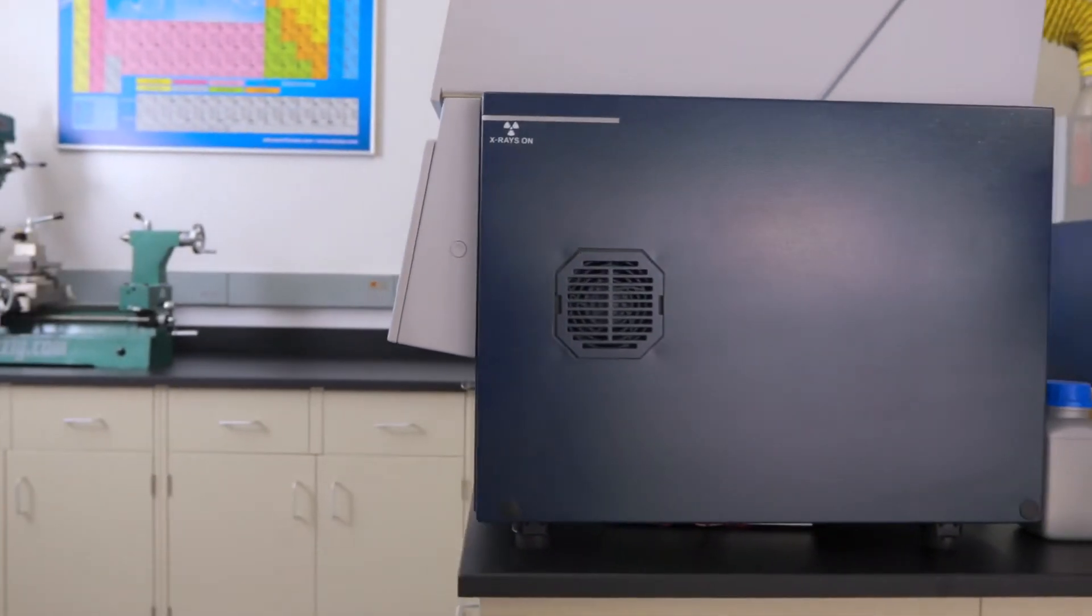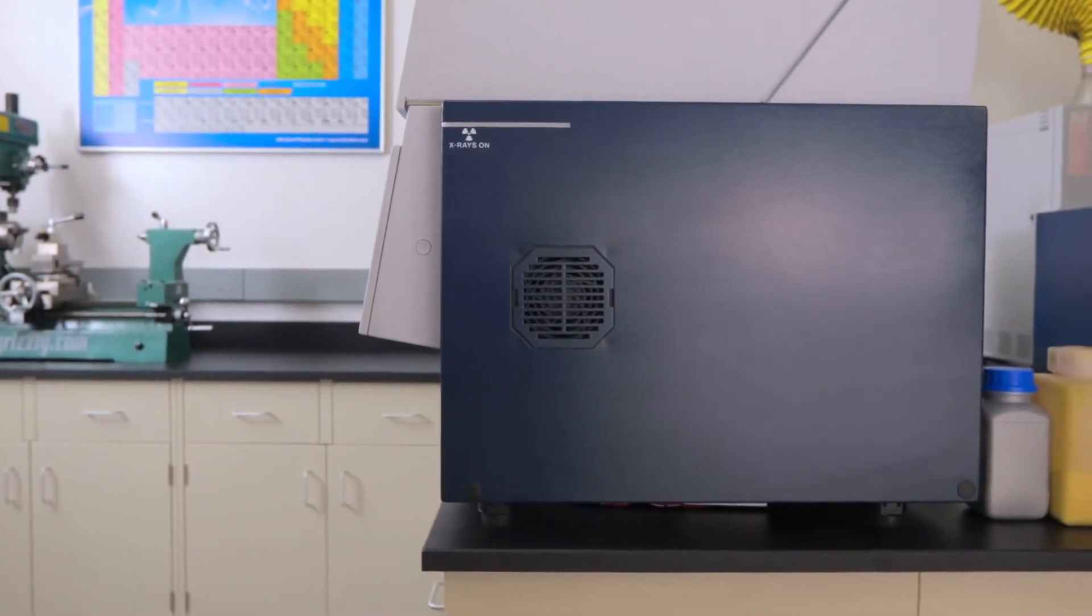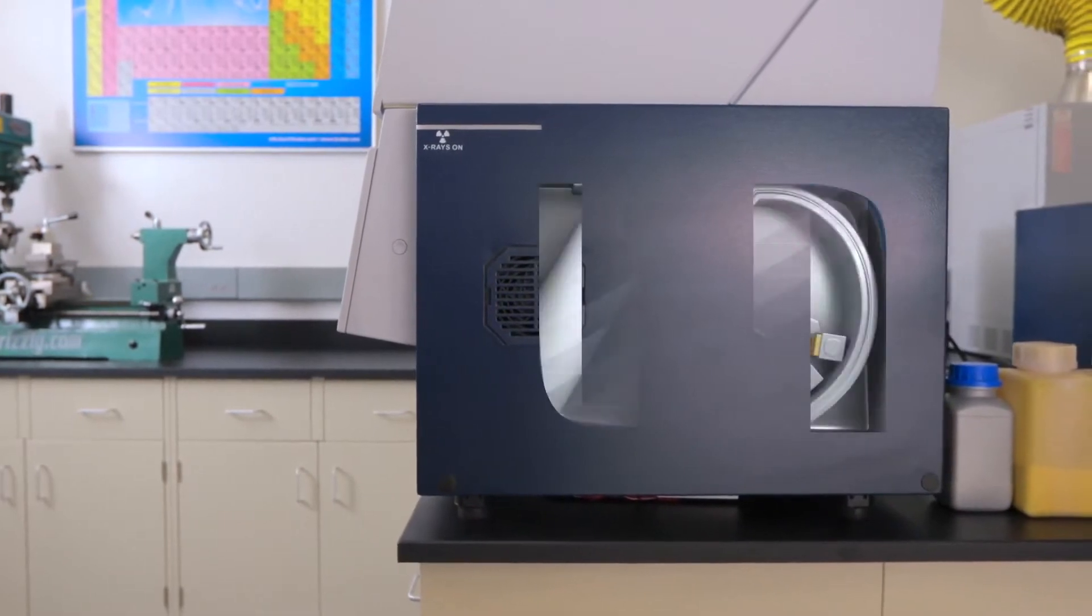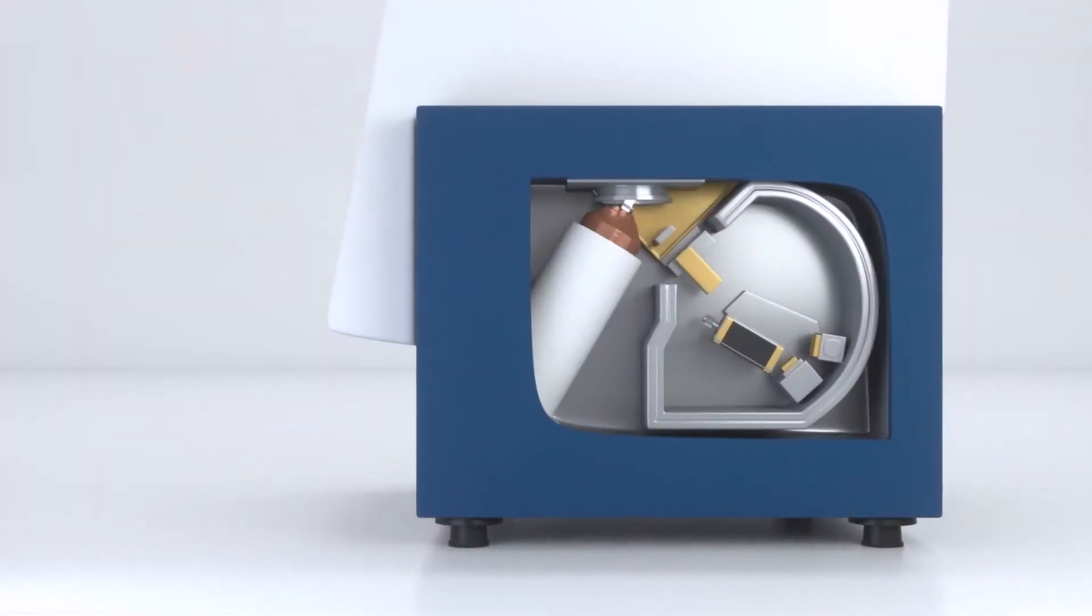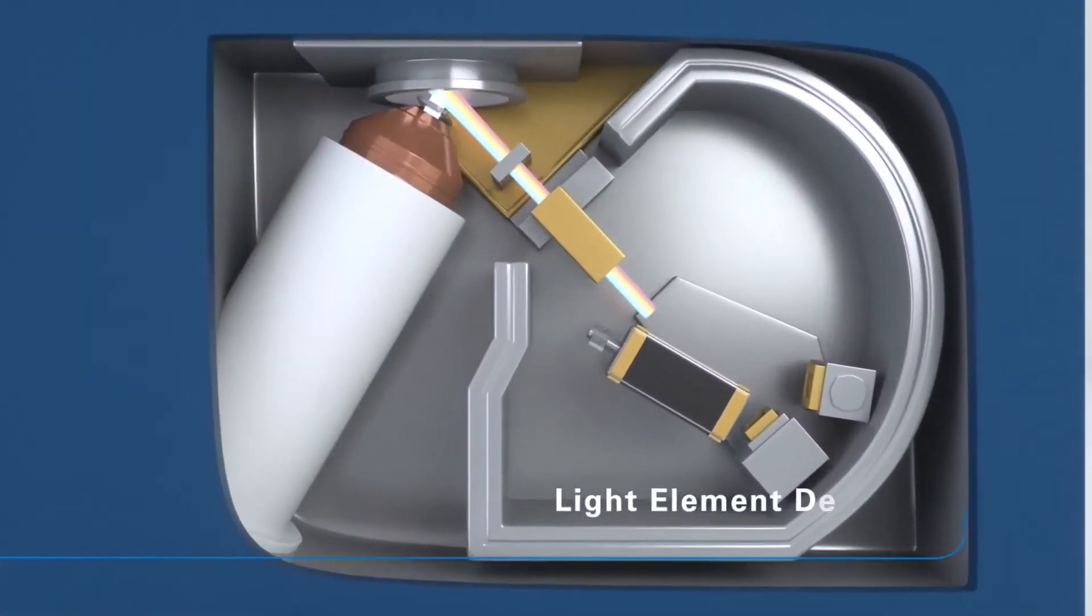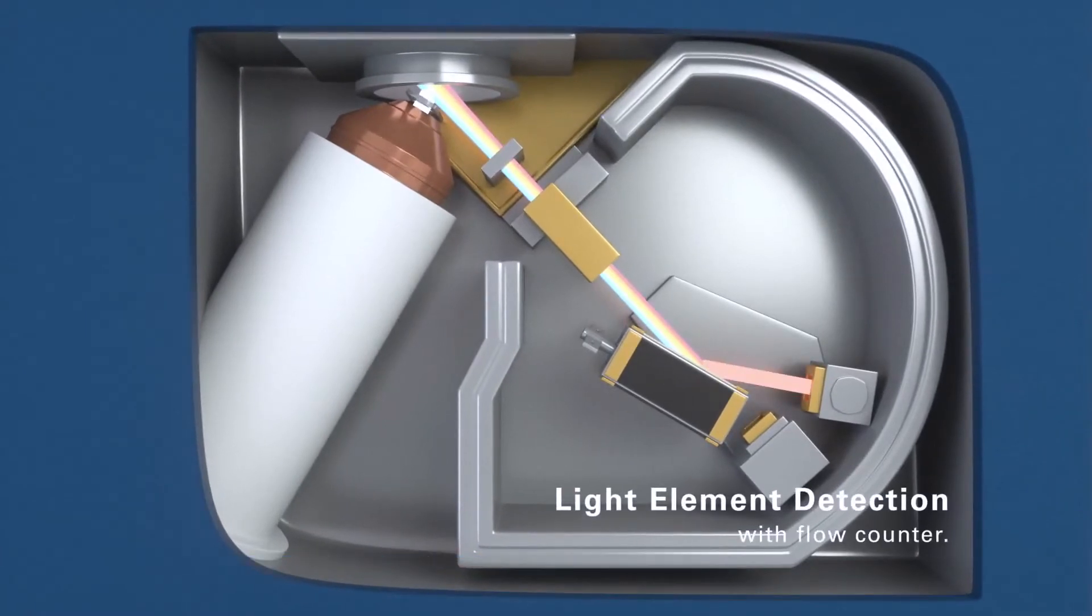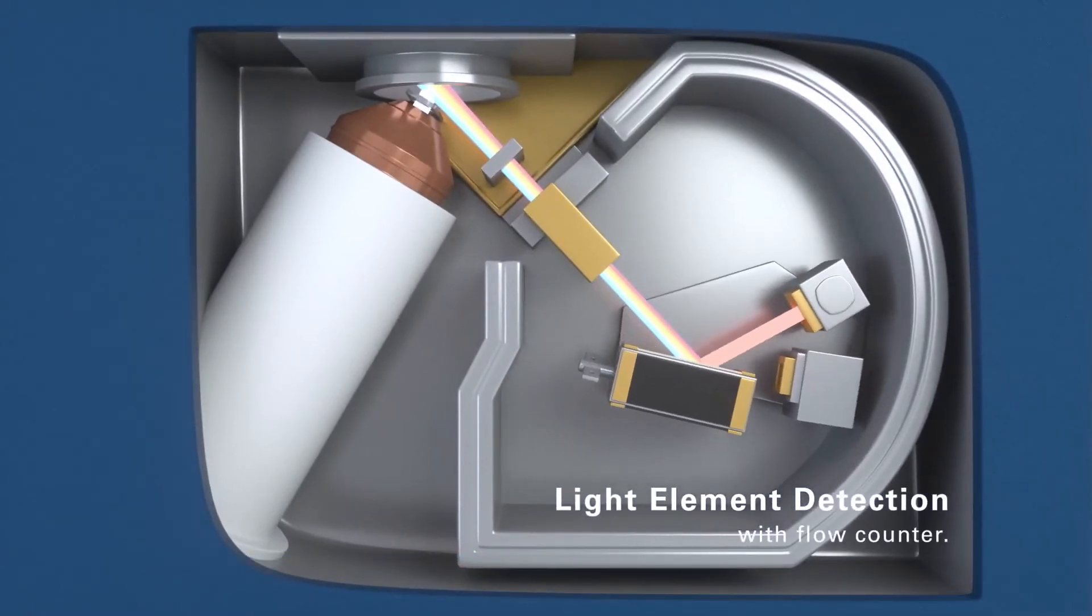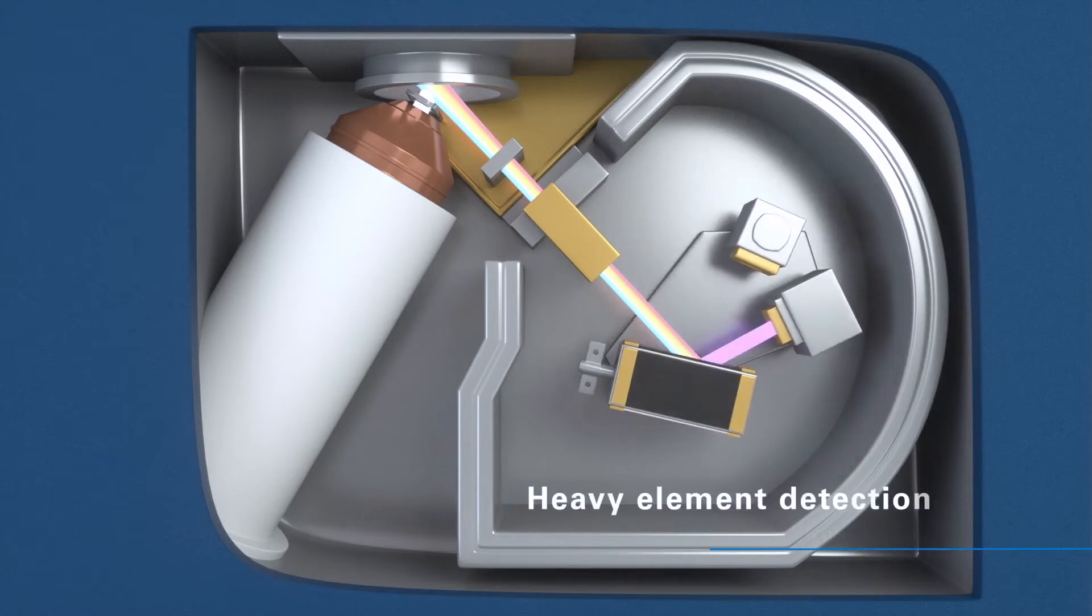The direct excitation power of 400 watts leads to excellent element sensitivity. Full power is available at 30 kilovolts for light elements and 50 kilovolts for heavy elements. The Hisense XC detector for heavy elements even comes with a two times better energy resolution than conventional counters.